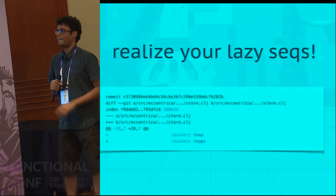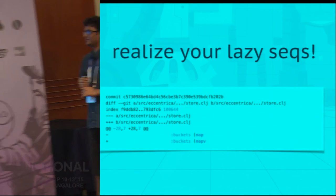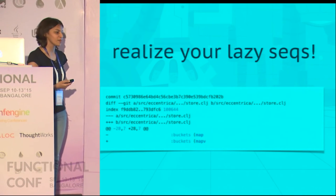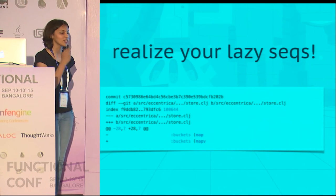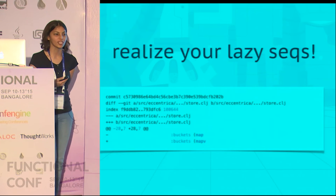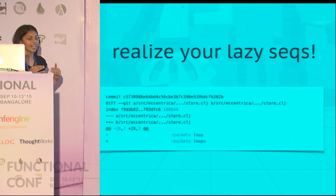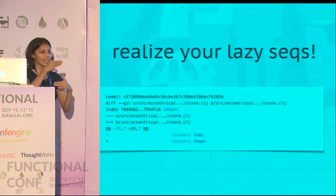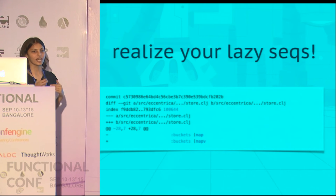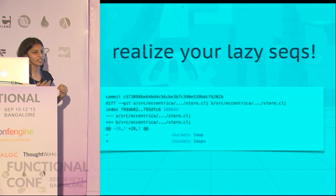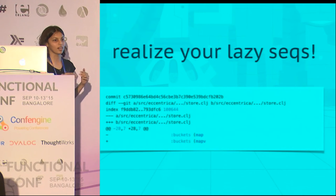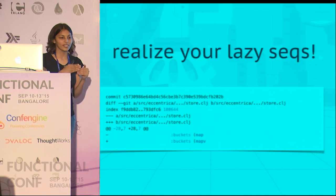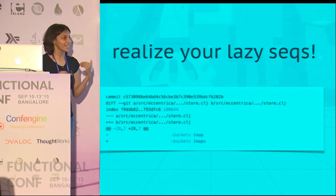As Abhinav was telling us, the way to handle this is to have an engineering practice where at every layer of your architecture where data is going from one layer to another, you ensure there's no unrealized lazy sequence crossing between two layers of code that don't know what they're getting.